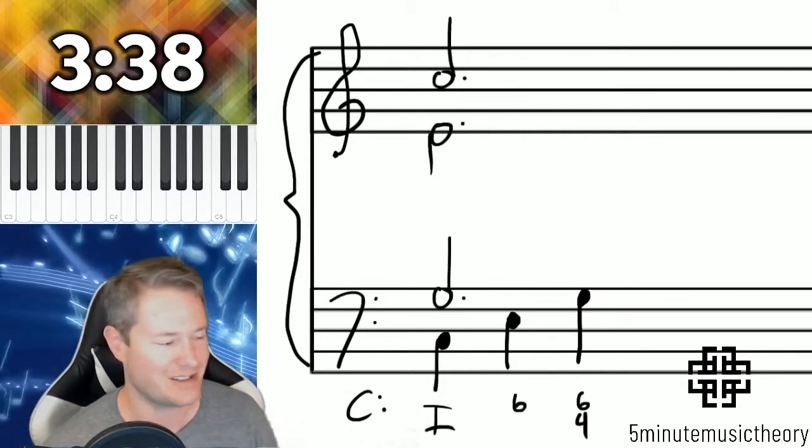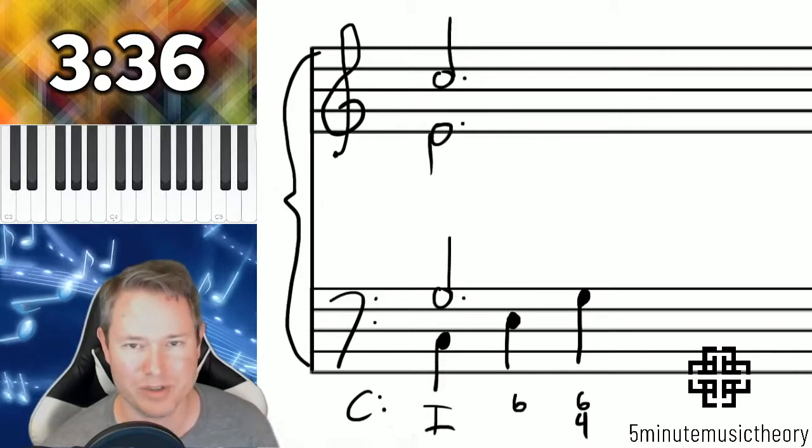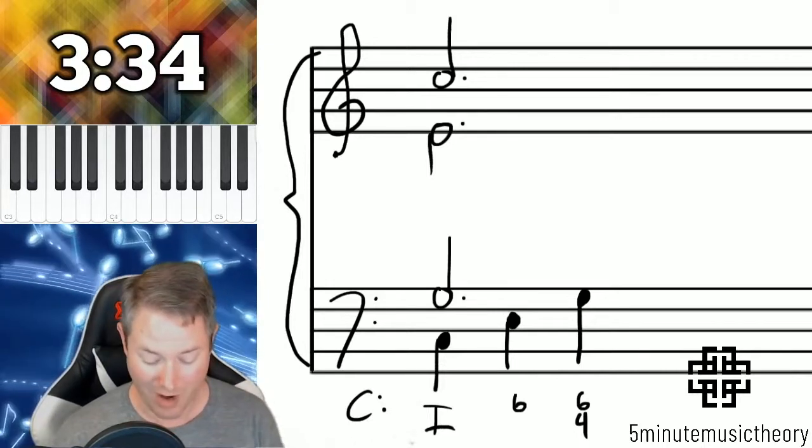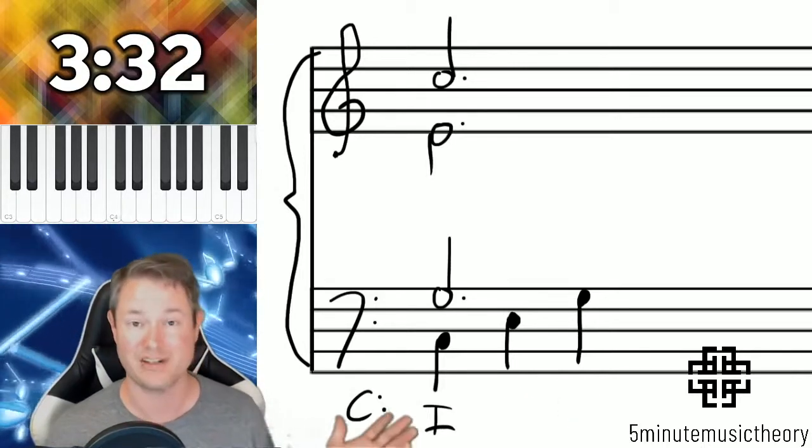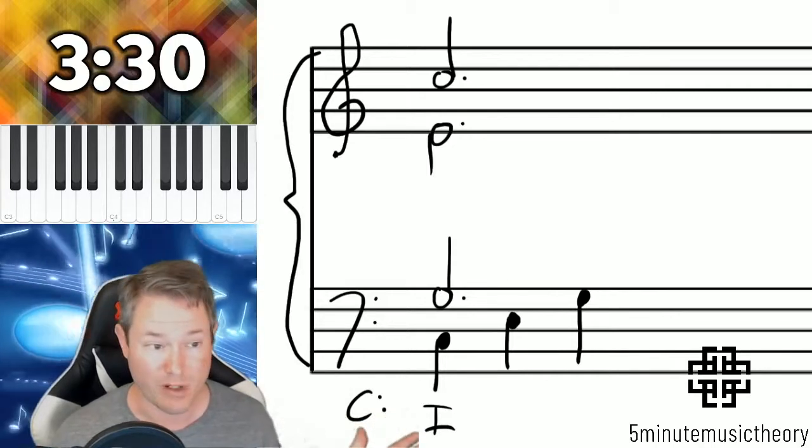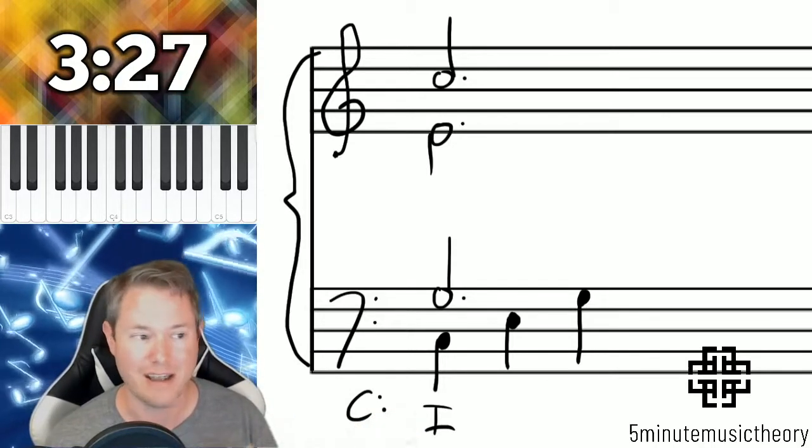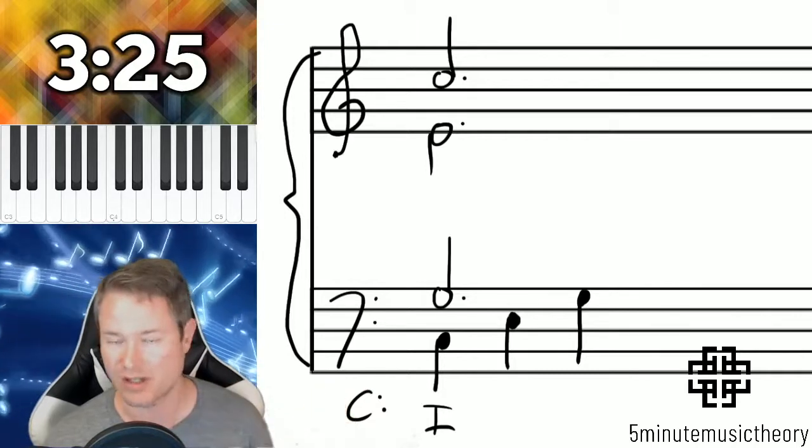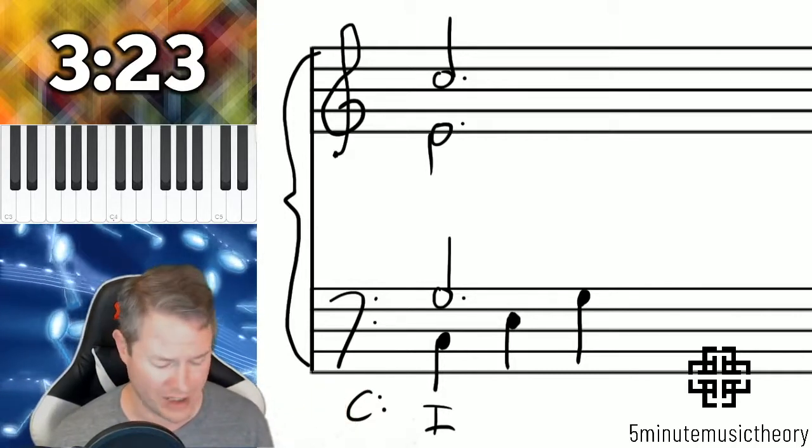The reason I don't really consider this to be a real type of 6-4 chord is that all that's happening here is a tonic chord. The bass is moving, but the bass really still is just the C, because all of that is a tonic chord. It's that the tonic chord happens to be arpeggiating.